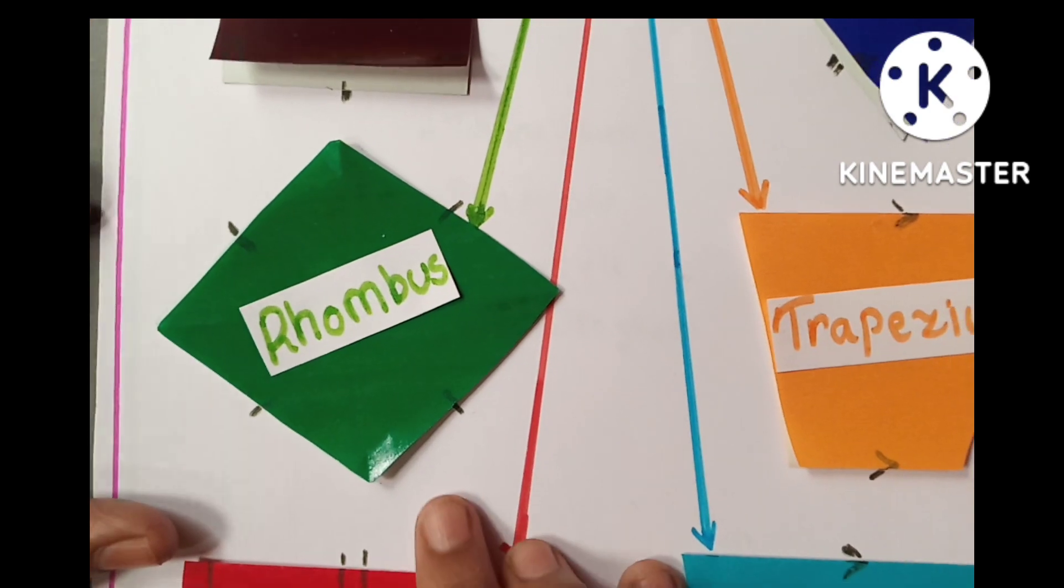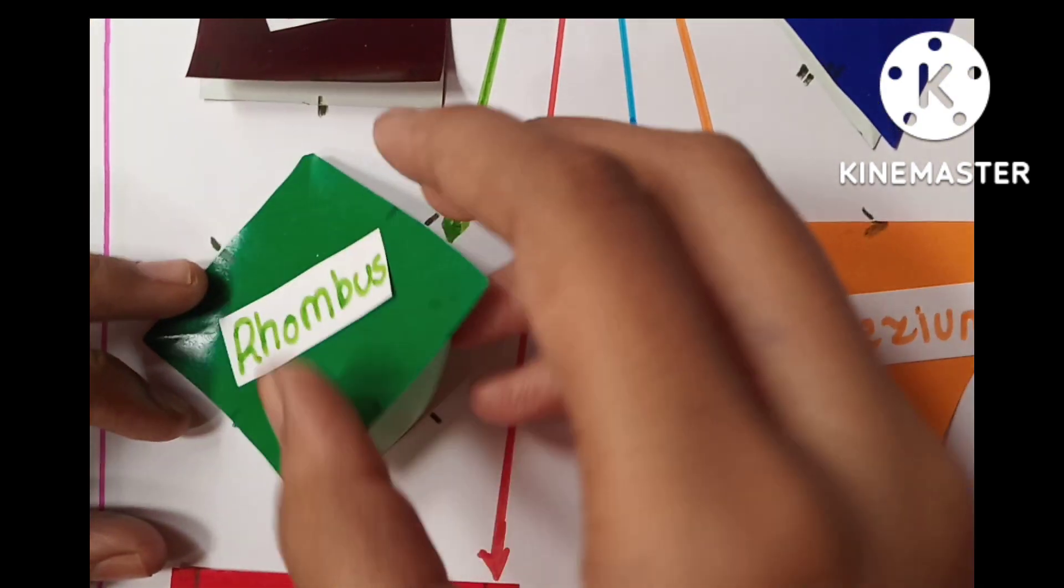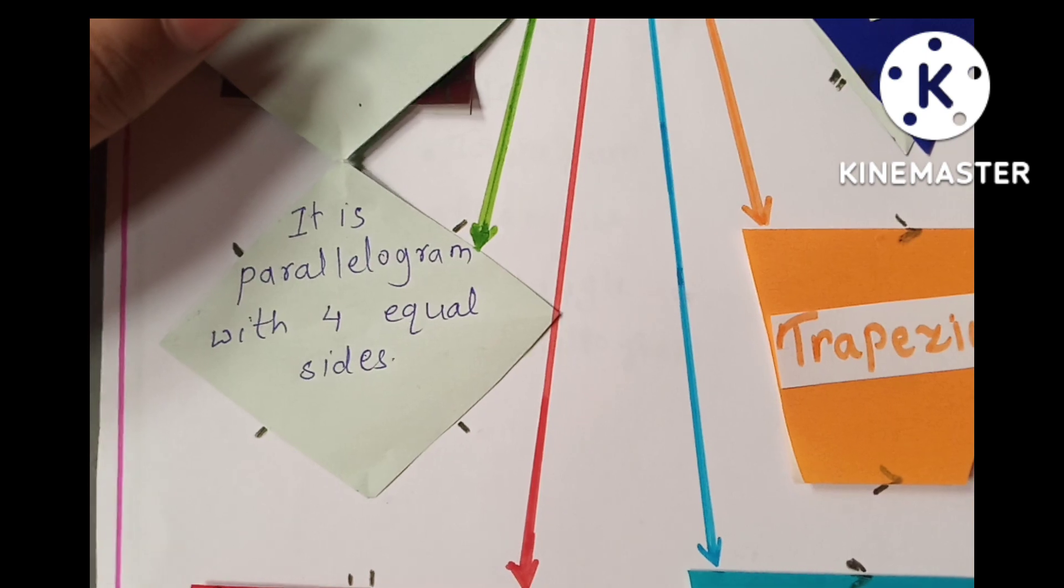Third one is rhombus. Here is its properties.